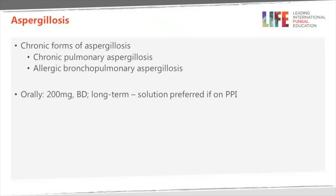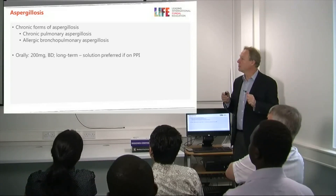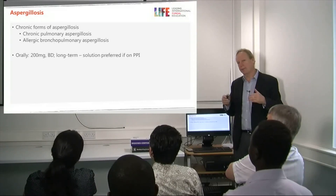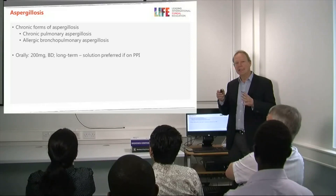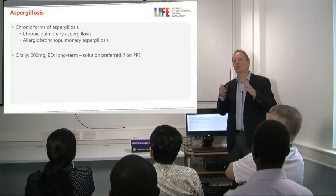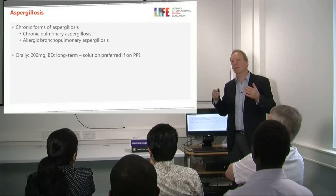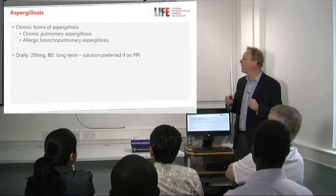For aspergillosis, particularly chronic and allergic forms, the standard dose is 200 mg twice a day. Some patients need a bit more or less, which is why we monitor levels in some patients. For allergic disease, a typical four-month trial is used; if they do well, treatment continues. For chronic disease, treatment is often six months to a year to achieve a good response.